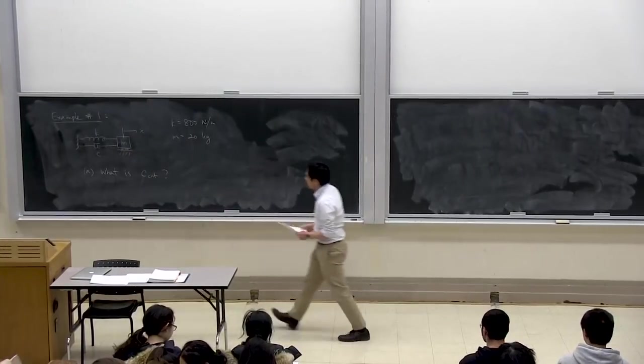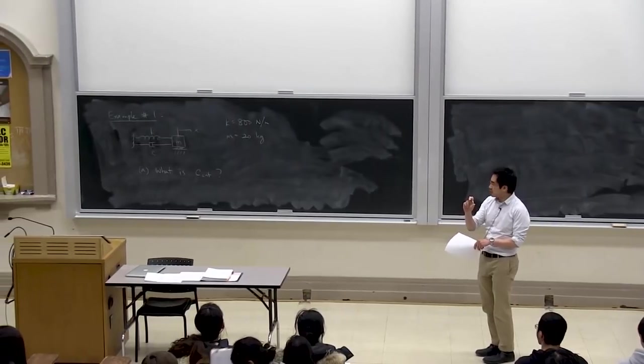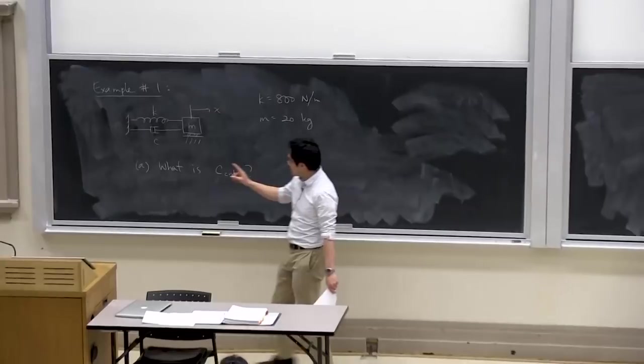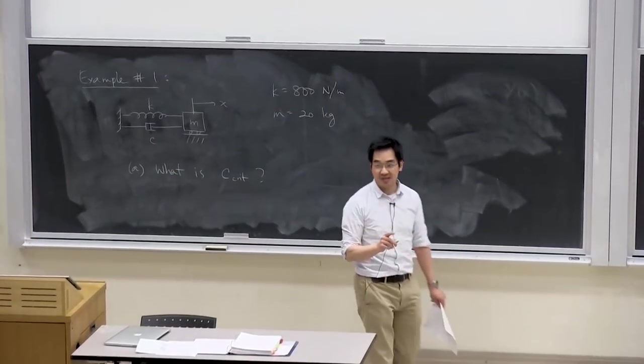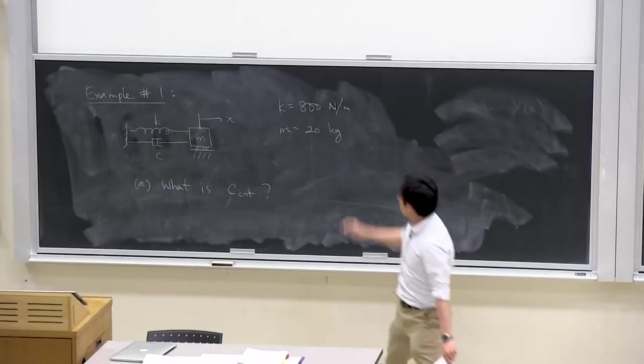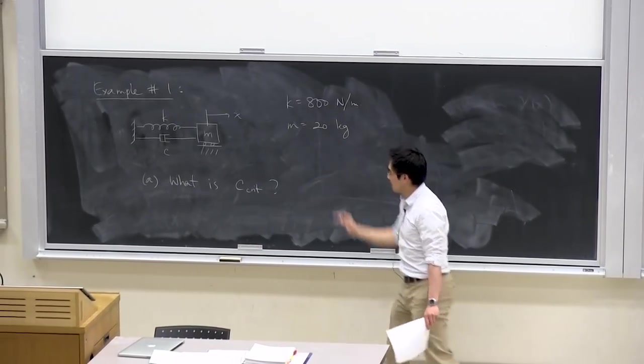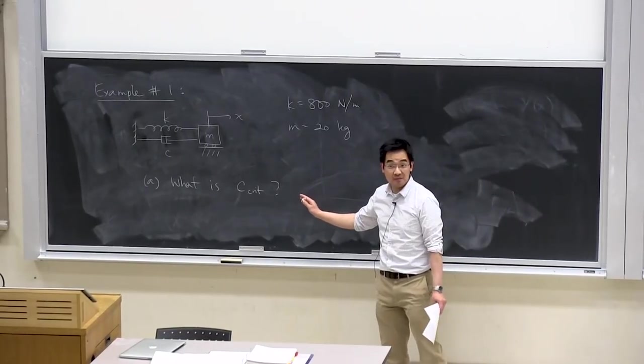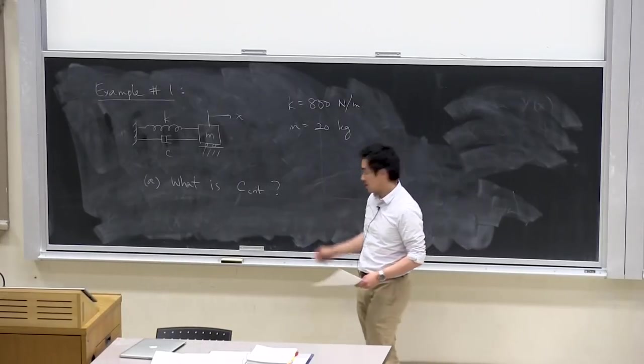Here's our first example. I'm going to keep this really simple, just to remind yourself of some of the terminology. We introduced the new concept, the damper, last class, which has a damping coefficient c. Right now there's a spring constant k = 800 N/m, mass is 20 kg. And you're asked first, what is c_critical? So right away, you don't even need to know what c is. We're just asking you for c_critical.